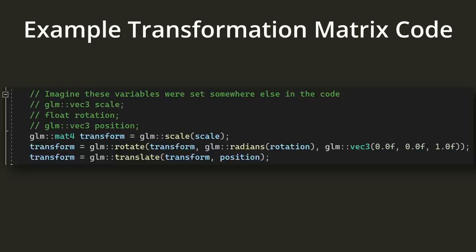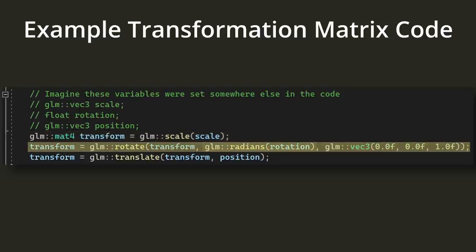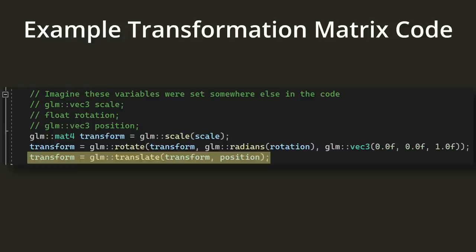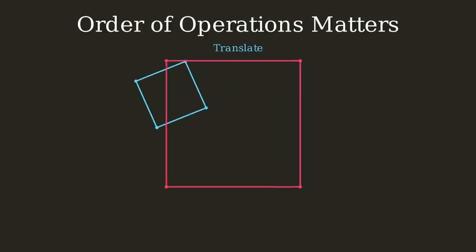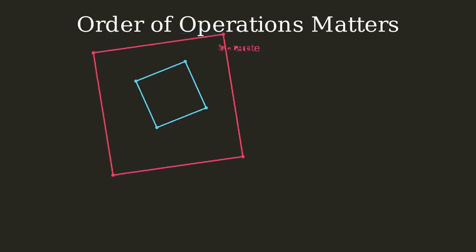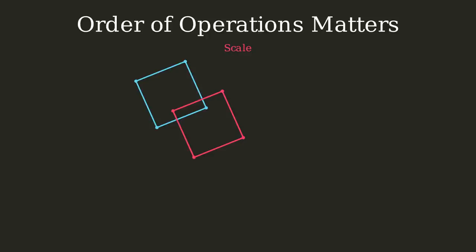First, you create a matrix specifying how much to scale the object in the x, y, and z dimensions. Next, you rotate the transformation by a given number of degrees around the z-axis. Finally, you translate the object to the desired position. An important thing to note is that the order of operations is very important. If you translate first, then rotate, then scale, the object will end up in a very different location. Typically, you want to scale first, then rotate, then translate, which does what we would intuitively expect.